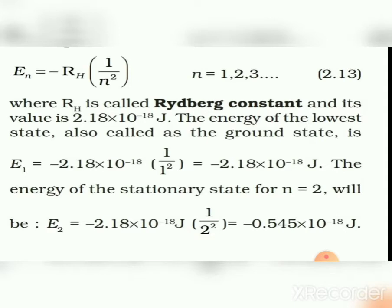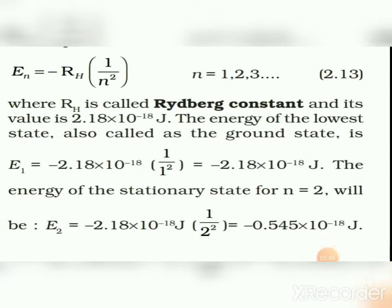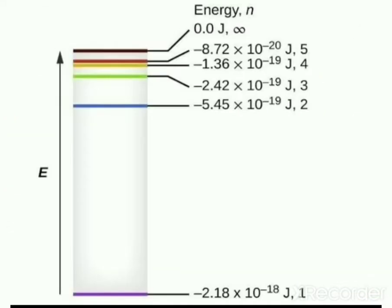The energy of the first orbit equals -2.18 × 10⁻¹⁸ × (1/1²) joules, giving E₁ = -2.18 × 10⁻¹⁸ joules. Similarly, for the second orbit, take n = 2: E₂ = -2.18 × 10⁻¹⁸ × (1/2²) joules, which gives E₂ = -0.545 × 10⁻¹⁸ joules.